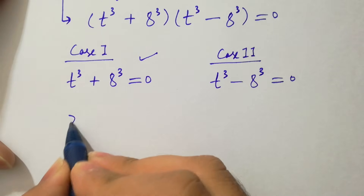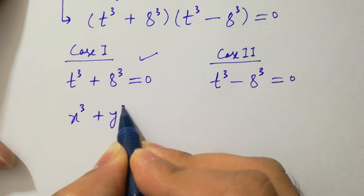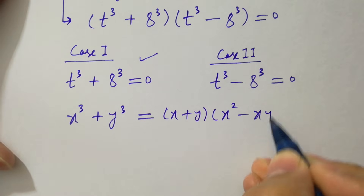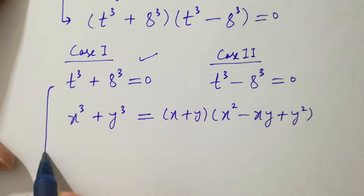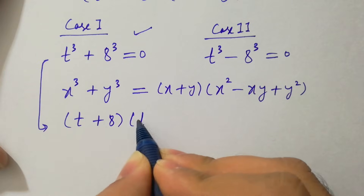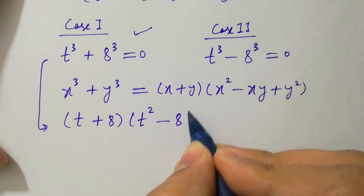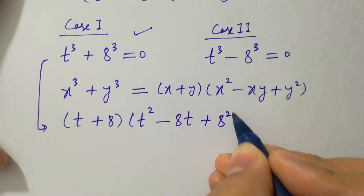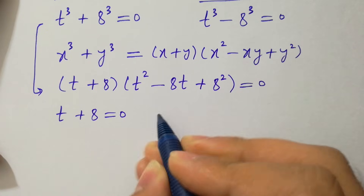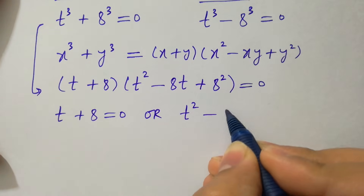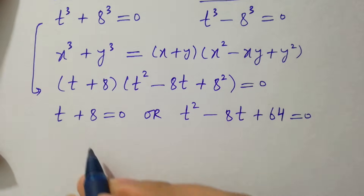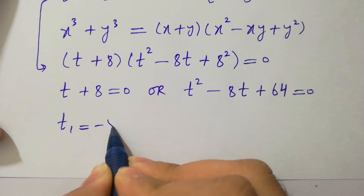We know the formula of x³ + y³, which equals (x + y)(x² − xy + y²). Applying this formula we have (t + 8)(t² − 8t + 8²) = 0, so either t + 8 = 0, or t² − 8t + 64 = 0.